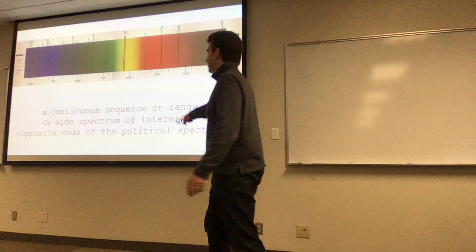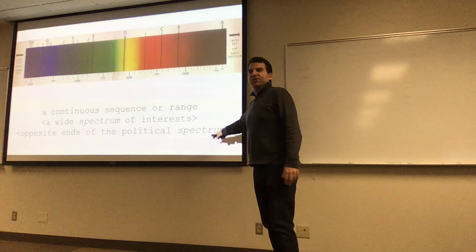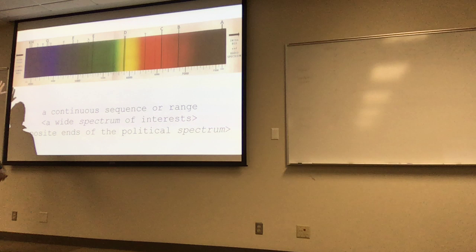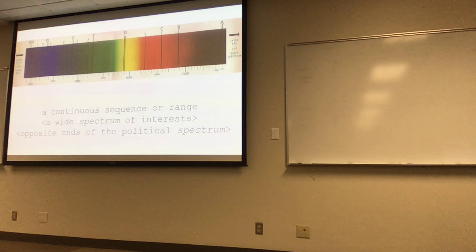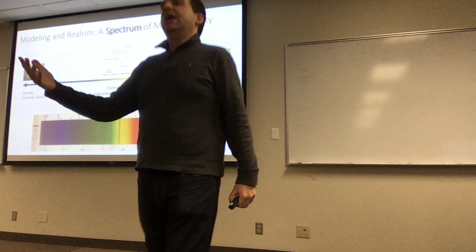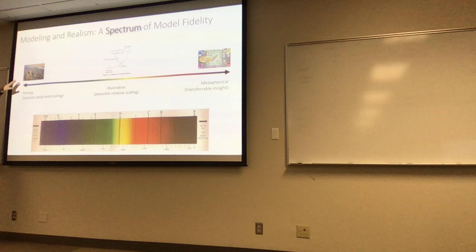There's another metaphor we can use here — spectrum. People use this term to mean a continuous sequence or range: a wide spectrum of interests, opposite ends of the political spectrum. The word spectrum, if we think about what we most concretely associate it with, people think of color — light spectrum. There are no discrete colors in light; it's a mixture of colors, and you can smoothly move from one to the other. We've used light as a model, a metaphor, to communicate other things that live on spectra. We can even put modeling itself on a spectrum.